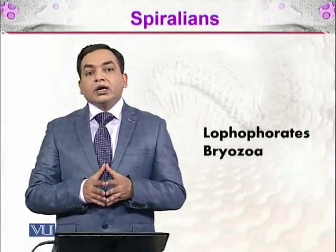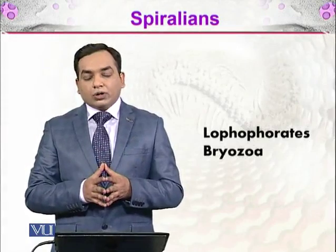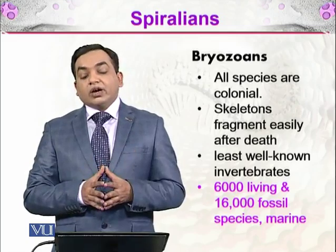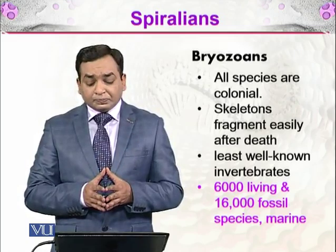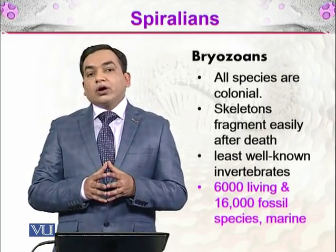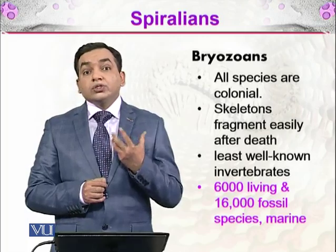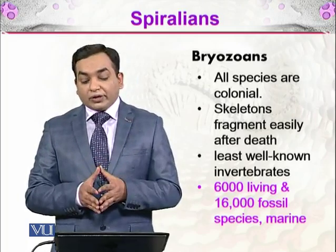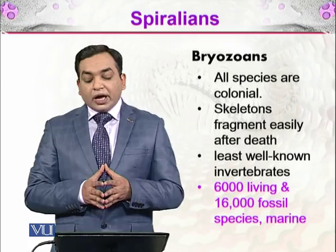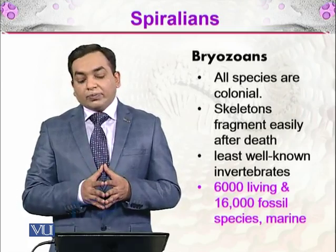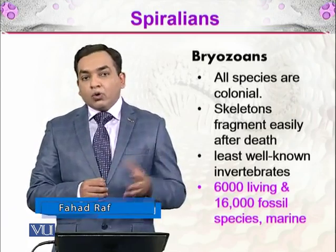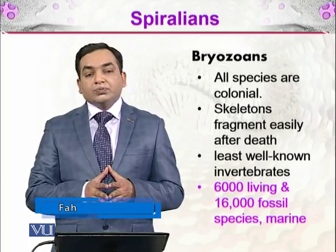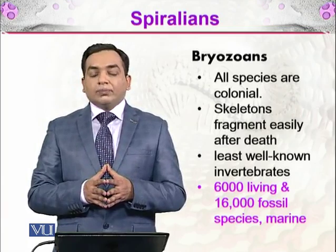In this section, we will be discussing the next group of lophophorates, which is Bryozoa. The bryozoans are organisms of which almost all species are colonial. These are organisms having very exquisite forms of skeletons, though these skeletons are not very durable after their death — they fragment easily. These are the least well-known invertebrates among all lophophorates. They have 6,000 living and 16,000 fossil species, and almost all of those are marine in nature.